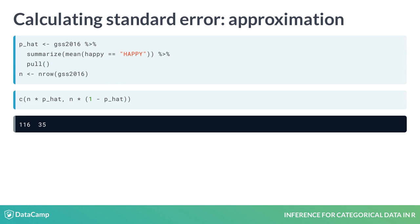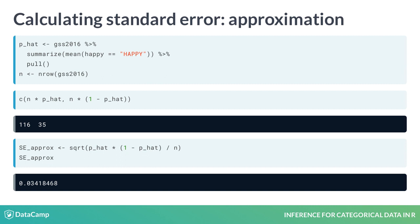We also know that the GSS uses random sampling to draw these observations, so it's safe to assume that one person's answer is independent of the next. This all means that the shortcut to calculate the standard error should be a reasonably good approximation. This method gives a value of about 0.034.